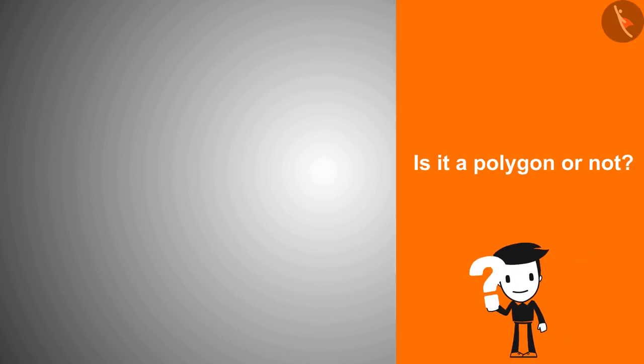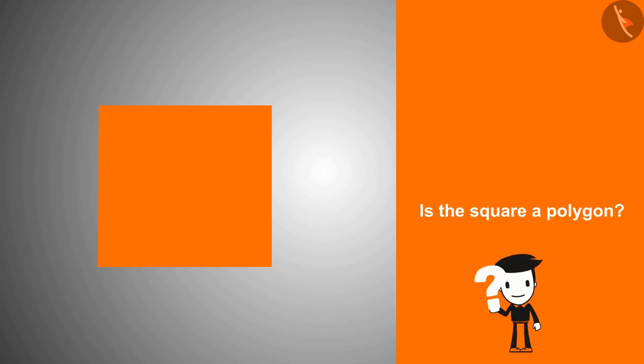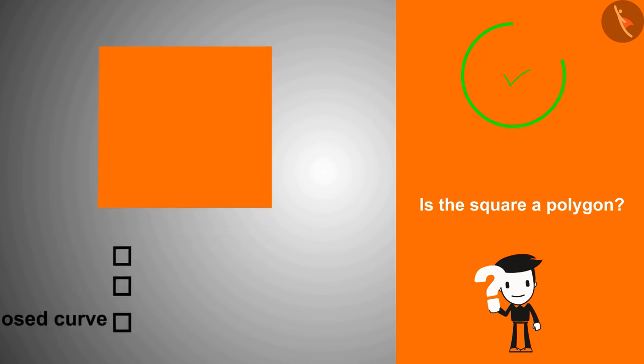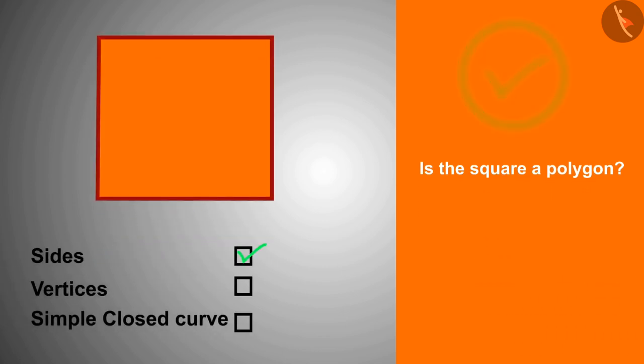Are you ready? Very good. Our first shape is a square. Is the square a polygon? Yes, the square has four sides and four vertices and is a simple closed curve, so it is a polygon.